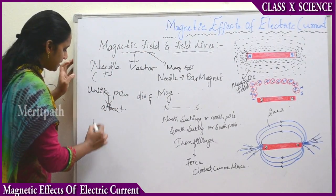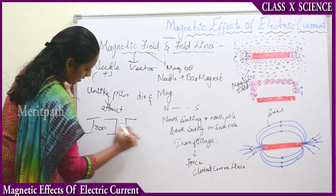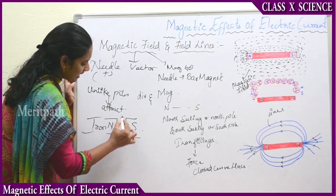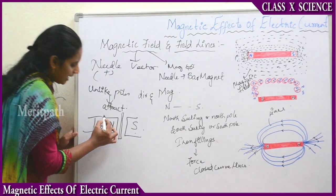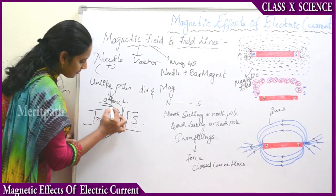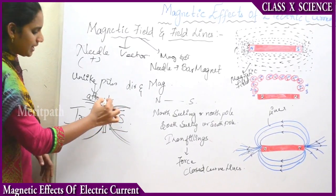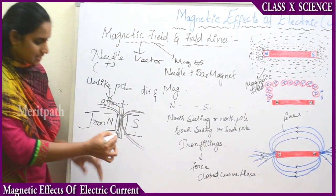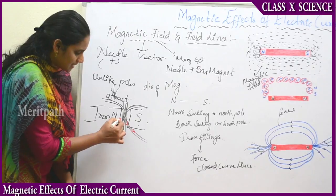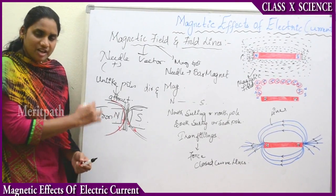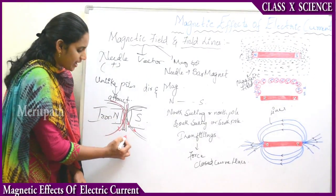If I consider the bar magnet, I am showing here the North Pole and the South Pole. These magnetic field lines are acting towards this bar magnet. In the middle, I have placed a conductor which is carrying the current. Whenever the magnetic field lines or the curved magnetic field strength is present and a conductor is flowing the current, the conductor will be deflected. That we can see with the help of the compass placed in the middle.